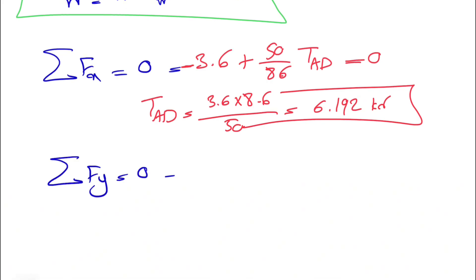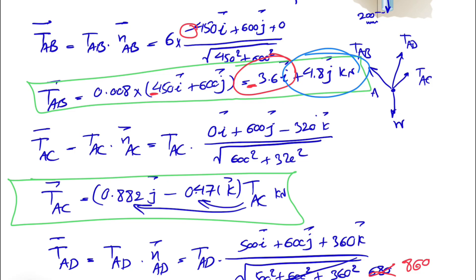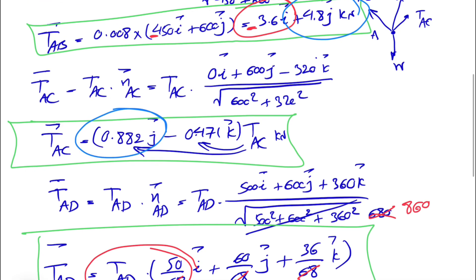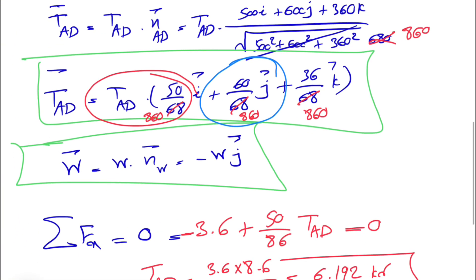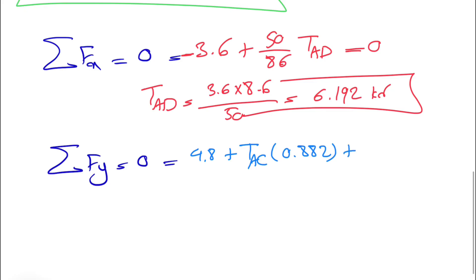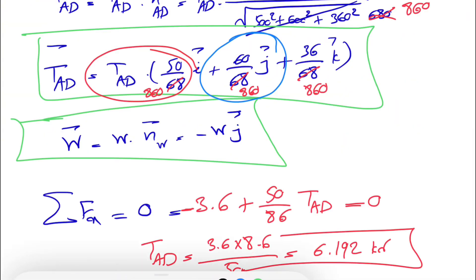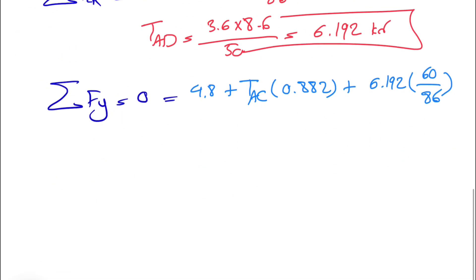For the sum of all forces in the Y direction equal to zero, we collect the Y components. From TAB we have 4.8. TAC contributes TAC times 0.882. TAD contributes 6.192 times 60/860. The weight W contributes -W. This gives us two unknowns, TAC and W, so we need to move on to the Z equation.